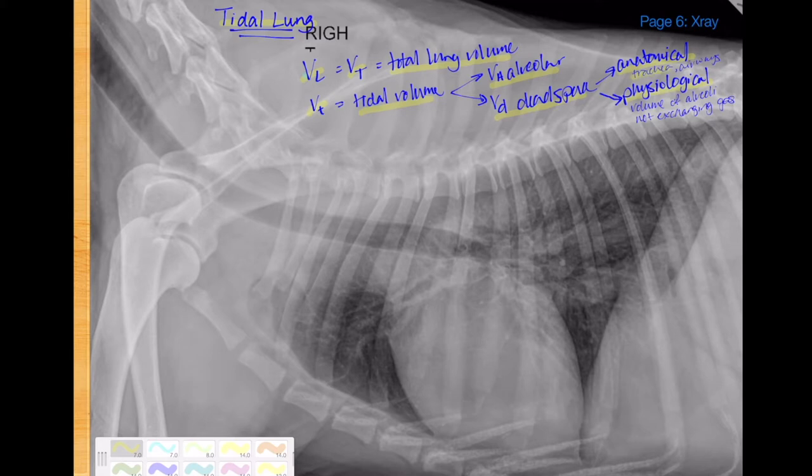Just FYI, physiological dead space is the volume of alveoli that are not undergoing gas exchange. And that can happen for a variety of reasons, such as insufficient ventilation perfusion, or just not using that portion of the lung.